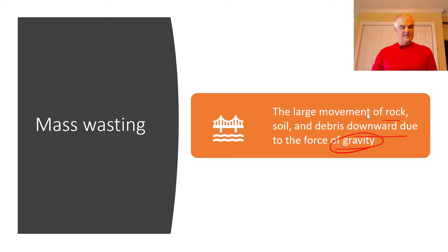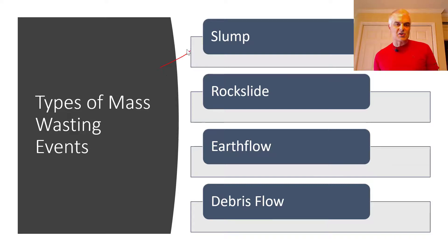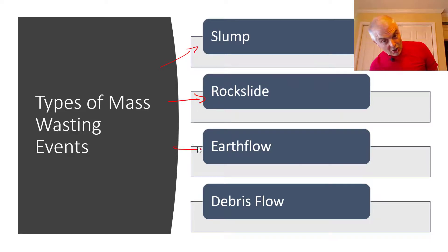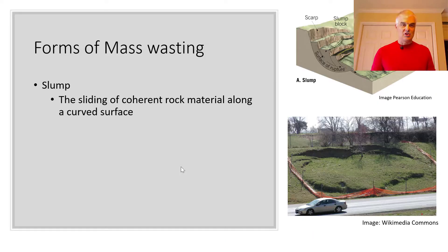You've heard of rock slides, right? And there are four kinds of mass wasting events: there's a slump, a rock slide, earth flows, and debris flows. There's four kinds. Let's look at each.